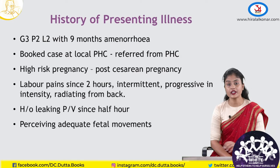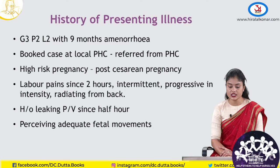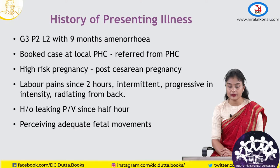Going ahead with history of presenting illness. She is a third gravida, para-2 living 2 with 9 months of amenorrhea. She was a booked case at local PHC where she was referred today in view of high-risk pregnancy, i.e., post-caesarean pregnancy. Labour pain since 2 hours — intermittent onset, progressive in nature, increasing in intensity and radiating from back. History of leaking per vagina since last half an hour. She is perceiving adequate foetal movements.